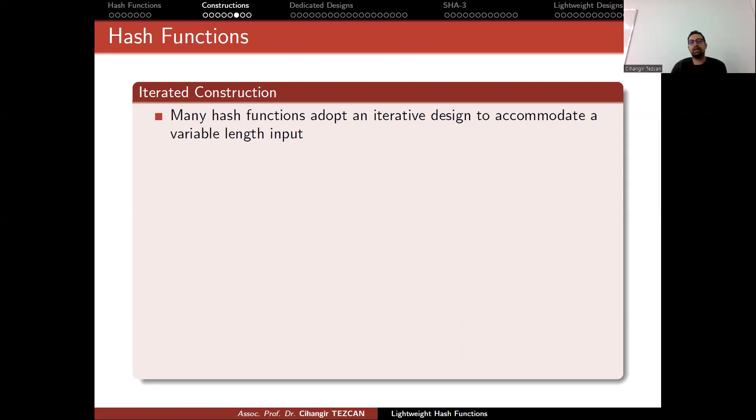But let's focus on other designs for hash functions. I will talk about Merkle-Damgard construction here, which is actually the mostly used one. But nowadays, we use sponge functions. So I will also show you how a sponge construction works for hash functions. So first, start with Merkle-Damgard.